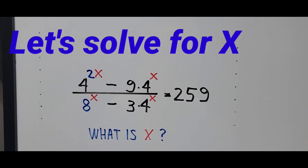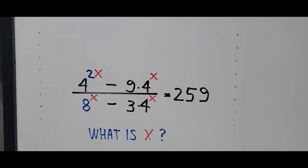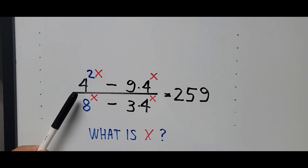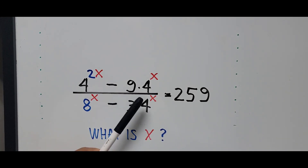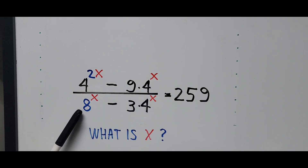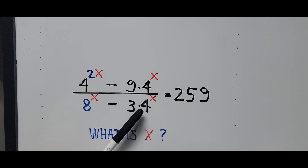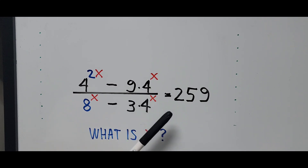Welcome to Cassiano Easy Math. Today's video is about solving another exponential equation: 4 raised to 2x minus 9 times 4 raised to x, divided by 8 raised to x minus 3 times 4 raised to x, equals 259. What is the value of x?